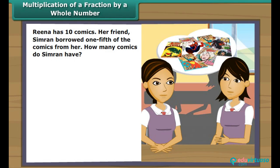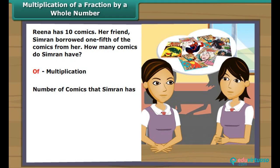Reena has ten comics. Her friend Simran borrowed one-fifth of the comics from her. How many comics does Simran have? Remember, 'of' means multiplication. Simran has one-fifth of ten comics, which means one-fifth multiplied by ten, which equals two. So Simran has two comics.